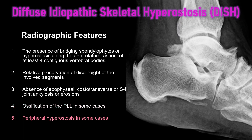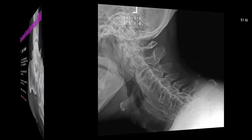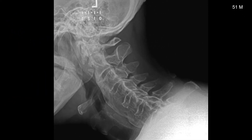Since DISH affects different ligamentous structures, there can also be peripheral hyperostosis — observed in this case in the ankle, but commonly seen in other areas like the pelvis. Let's now take a look at some real cases of DISH; there are about 15 or so examples.